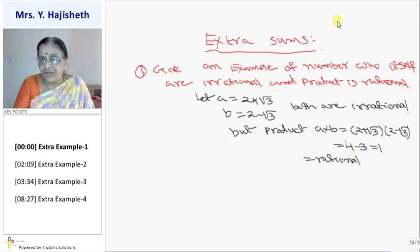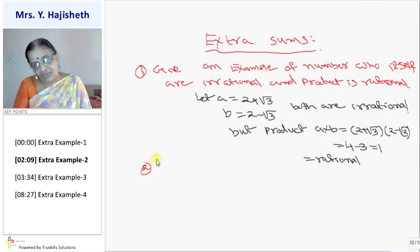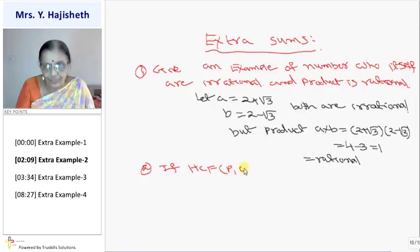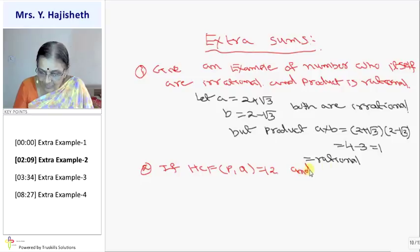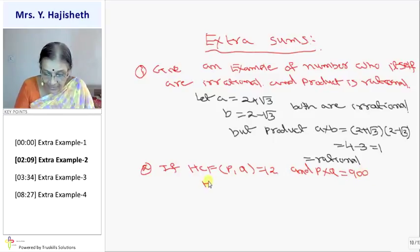Now sum number 2. Each child will get different different answers. And all children are right. If HCF of P and Q is equal to 12, and product of P and Q is given as 900.